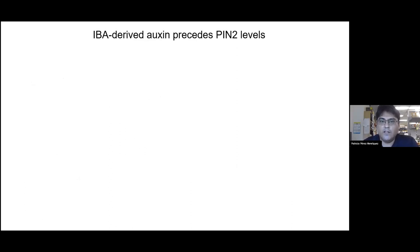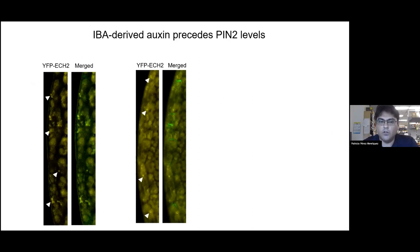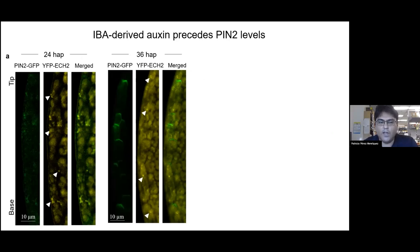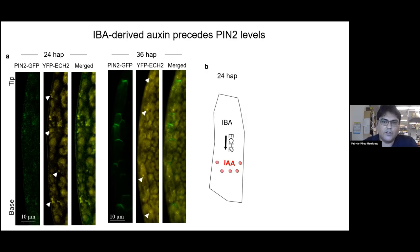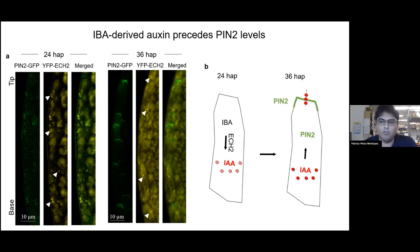The rate-limiting enzyme of this IBA-to-IAA conversion, called ECH2, is present in those marginal cells — identified by spectral imaging — in the presence of PIN2 and before PIN2 is expressed, as shown here at 24 hours after plating the embryo. This suggested that IBA is converted to IAA by this enzyme, and then IAA promotes the expression of this transporter.